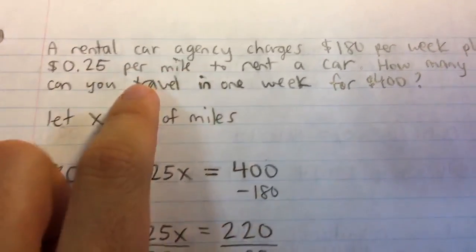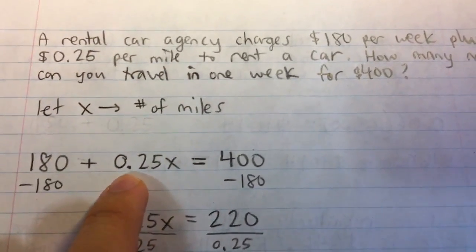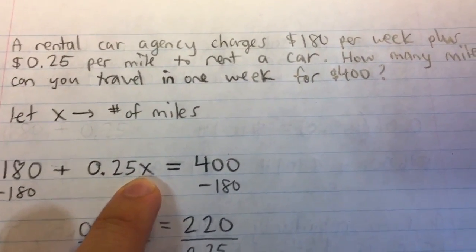But as for the miles, it's 0.25, 25 cents per mile, so that's 0.25 times the number of miles, X.